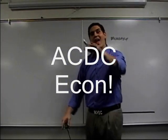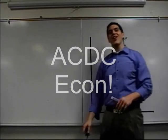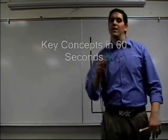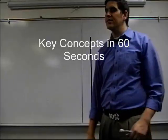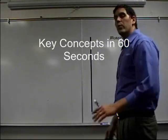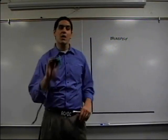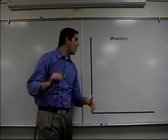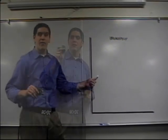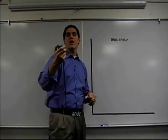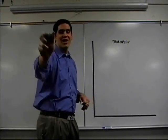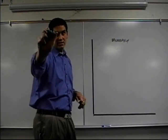Hey, how you doing? This is Mr. Clifford with AACDC Econ, Key Economic Concepts in 60 Seconds. When we're talking about imperfect competition, we're talking about monopolies — you've got to know how to draw this graph. I'm going to show you the concepts and the graph in 60 seconds.